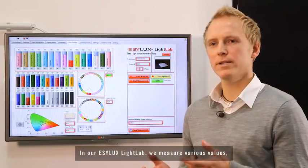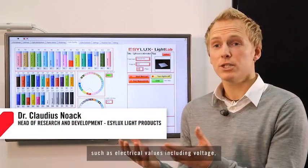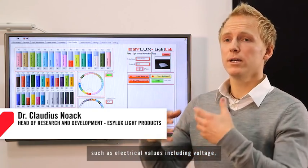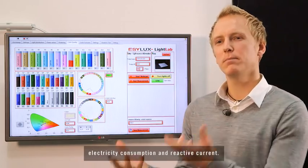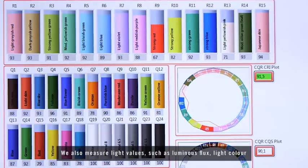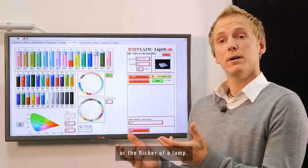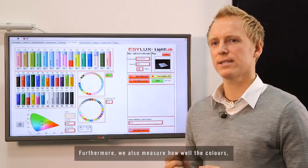In unserem EasyLooks-Light-Labor messen wir verschiedene Werte, zum Beispiel elektrische Werte wie Spannung, Strom, gesamten Verbrauch oder die Phasenverschiebung und damit den Blindstrom auch, aber wir messen auch die Lichtwerte oder die Lichtfarbe, wie genau ist eigentlich die Lichtfarbe oder das Flimmern, wie stark flimmert eine Lampe, was auch ganz wichtig ist.